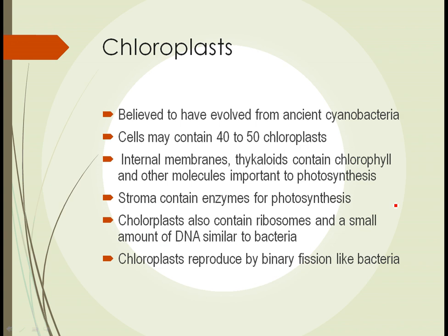Chloroplasts — each cell might contain 40 or 50 of these. It's thought that chloroplasts evolved from ancient cyanobacteria that were enveloped by other cells; their structure is in fact very similar to cyanobacteria. Chloroplasts have internal membranes containing chlorophyll and other molecules important to photosynthesis. They contain stroma with enzymes that help photosynthesis, and they contain ribosomes and a small amount of DNA, similar to cyanobacteria. Chloroplasts can also reproduce inside the cell via binary fission, like bacteria.